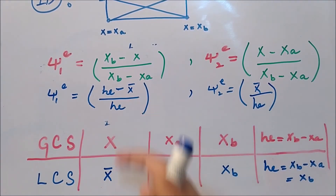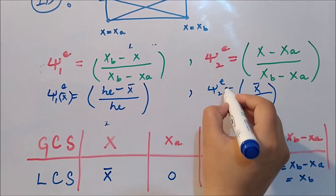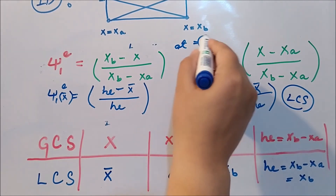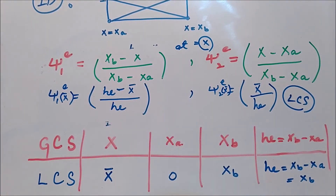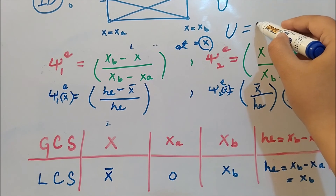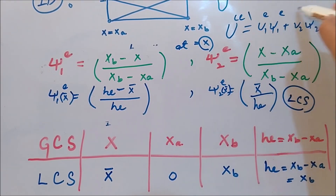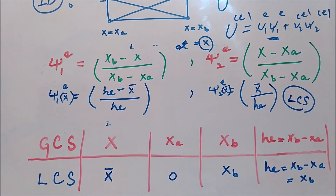For the second shape function: x is replaced by x-bar, x_a equals zero, and x_b equals h, giving ψ₂ = x-bar / h. These two local shape functions — ψ₁ = (h − x-bar)/h and ψ₂ = x-bar/h — can then be plugged into u = u₁ψ₁ + u₂ψ₂ to obtain the primary variable in the local coordinate system at the element level.